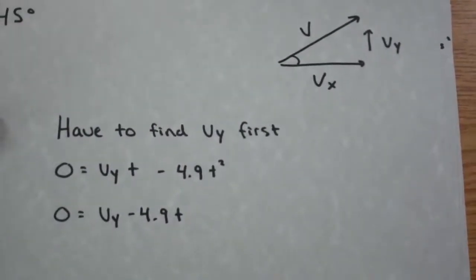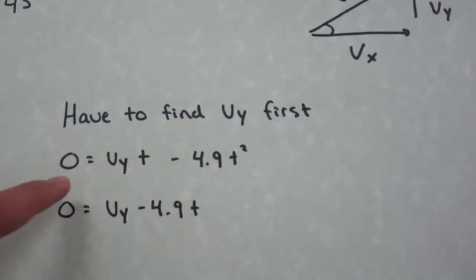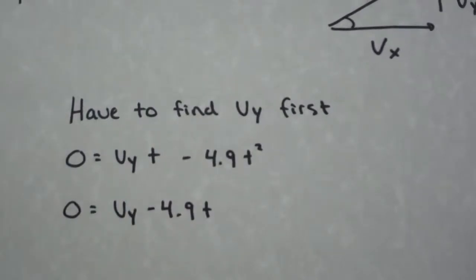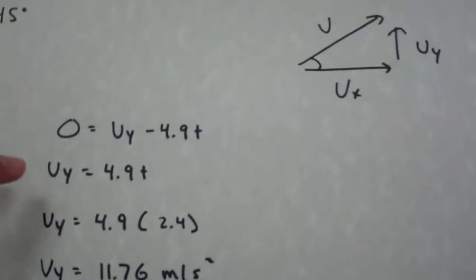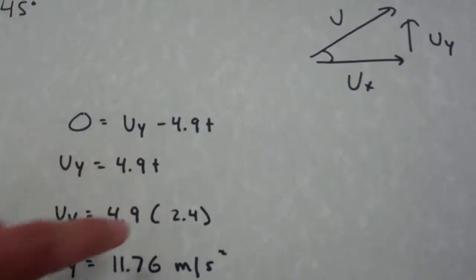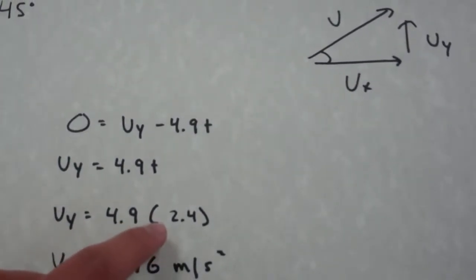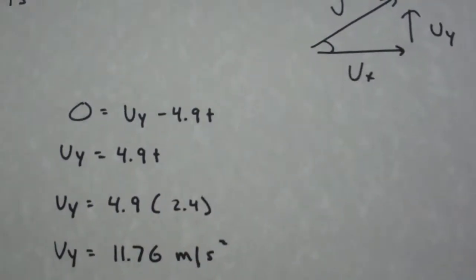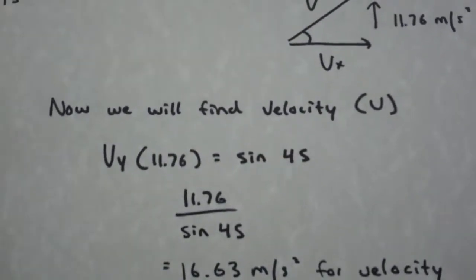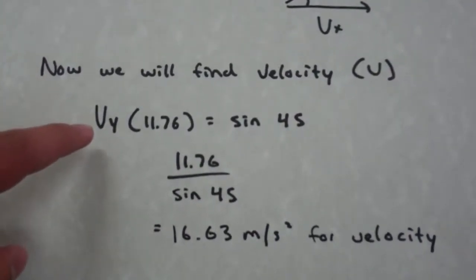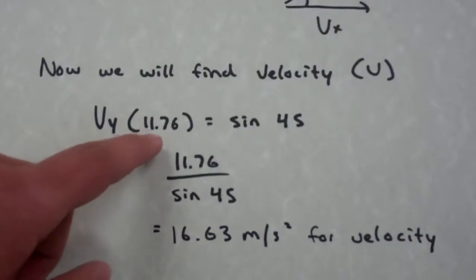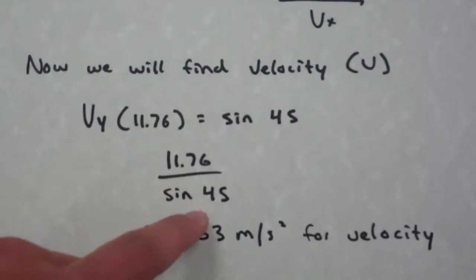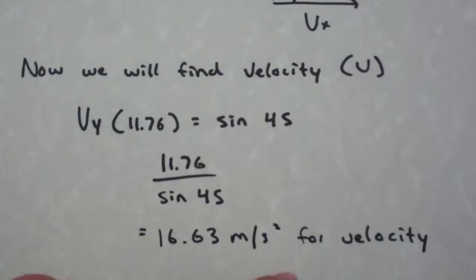Now we will go to the 45 degree angle. First we have to find Vy, so we will use the formula of Vy times time minus 4.9t squared. We get Vy minus 4.9t, which reduces to Vy equals 4.9t. Vy equals 4.9 times the time of 2.4 seconds, so we get a Vy of 11.76 meters per second. Now we will find the velocity of the potato at a 45 degree angle: 11.76 equals the sine of 45 degrees, and we divide 11.6 by the sine of 45 to get a velocity of 16.63 meters per second.